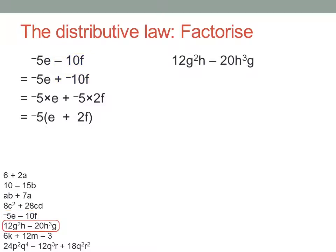Here's one with a few powers of each variable. 12g squared h minus 20h cubed g. What's the highest common factor? Well, with the numbers, 4 goes into both 12 and 20. And for the variables, both terms have at least one g and at least one h.